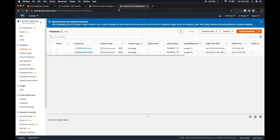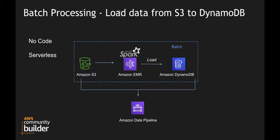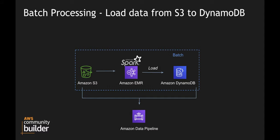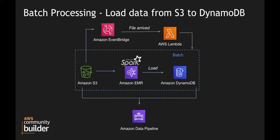For the next level of automation, instead of manually clicking Activate you can use EventBridge to get a notification when a file arrives in S3, push that into an SNS topic, trigger a Lambda, and have that Lambda trigger the Data Pipeline activation via the AWS SDK. The pipeline then creates the EMR cluster and loads data from S3 into DynamoDB automatically. This is essentially the same pattern as my earlier video on getting S3 notifications into Lambda — the only difference is adding SDK code to trigger the Data Pipeline.